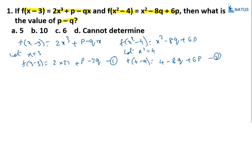Both expressions equal f(0), so they are equal. Equating: 54 + p - 3q = 4 - 8q + 6p.